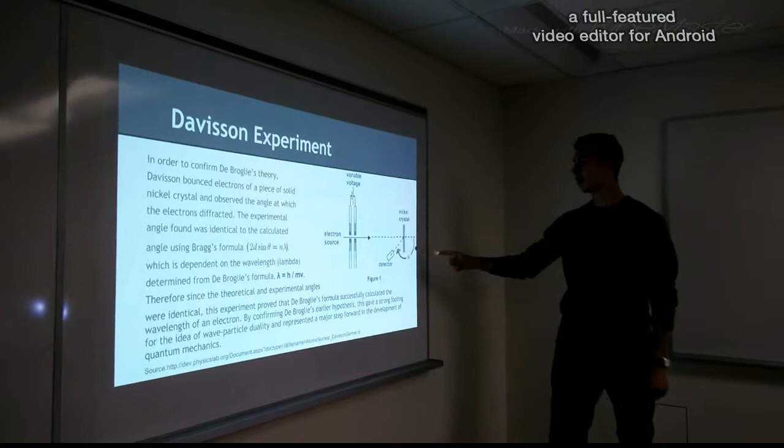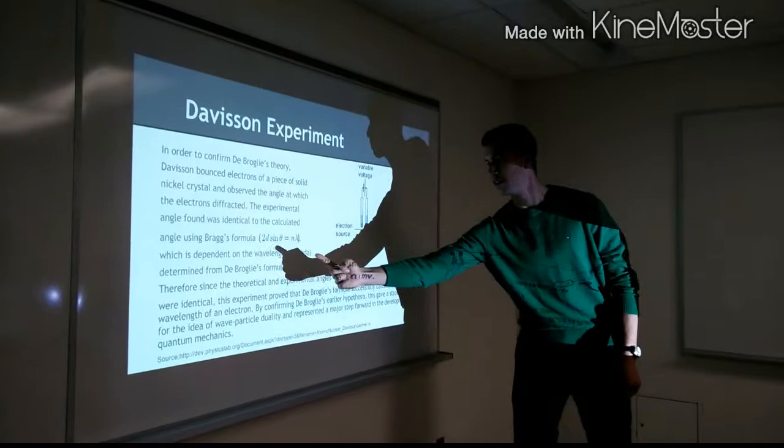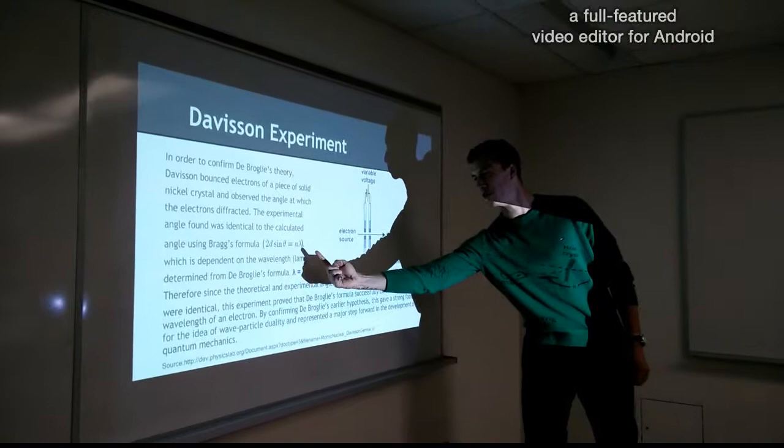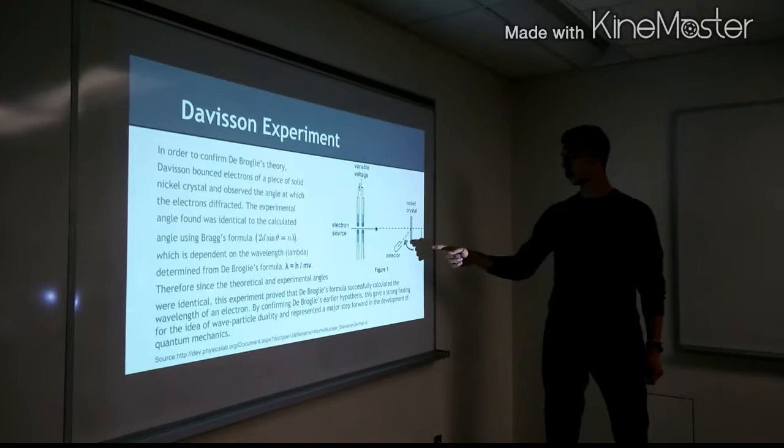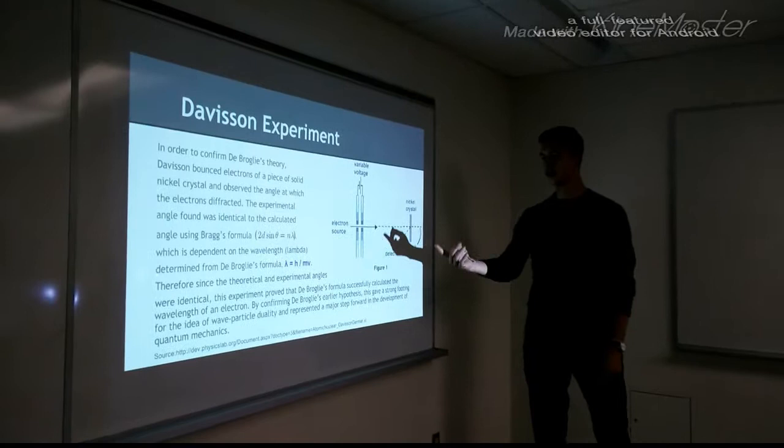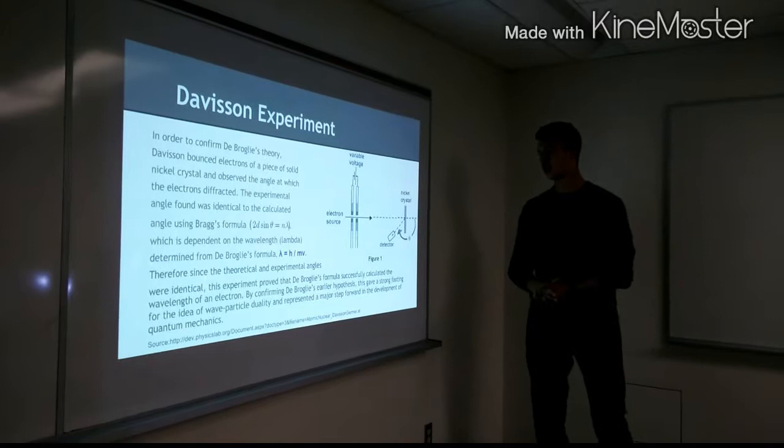This angle shown here was calculated using Bragg's formula, which is shown right there. Bragg's formula is dependent on the wavelength, which is that variable there called lambda. The wavelength itself was determined from De Broglie's formula, which he generated. Therefore, when they conducted this experiment, the angle that was shown experimentally was the same that was shown theoretically. And as a result, they confirmed that De Broglie's formula does in fact work in the real world.